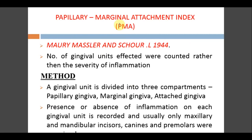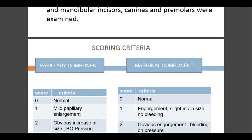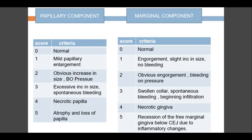The Papillary Marginal Attachment Index, or PMA Index, was given by Massler and Schour in 1944. It is based on counting the number of gingival units affected rather than severity of inflammation. The gingival unit is divided into three compartments: Papillary gingiva (P), Marginal gingiva (M), and Attached gingiva (A). Presence or absence of inflammation is recorded, usually on maxillary and mandibular incisors, canines, and premolars.